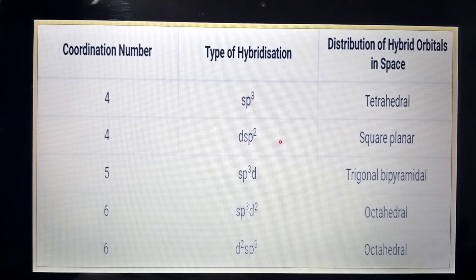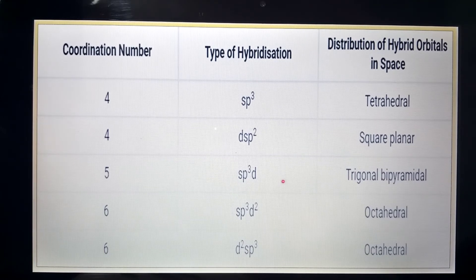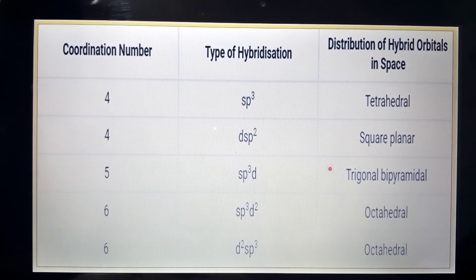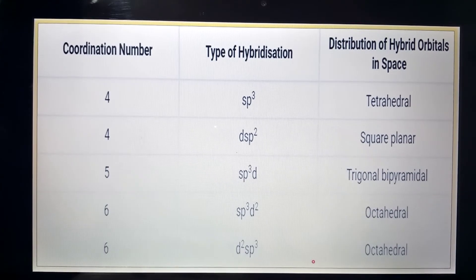For dsp2 hybridization, we have 1d, 1s, and 2p orbitals — coordination number 4 (1+1+2) — and the geometry is square planar. For sp3d hybridization, the coordination number is 5, requiring 1s, 3p, and 1d orbitals, giving trigonal bipyramidal geometry. For sp3d2 hybridization, the coordination number is 6 and the structure formed in space is octahedral.